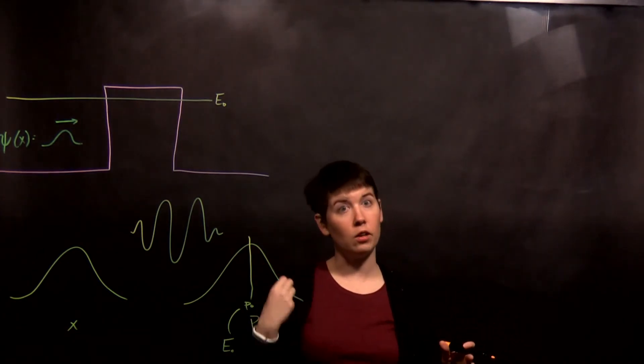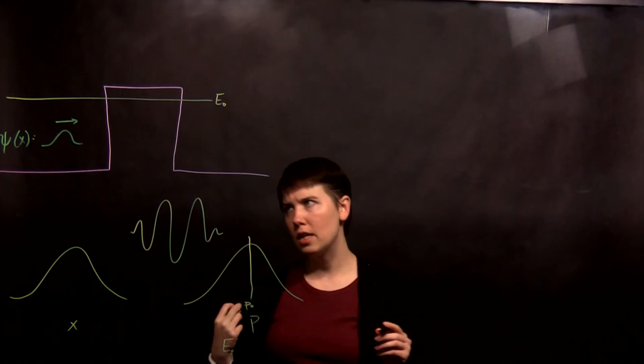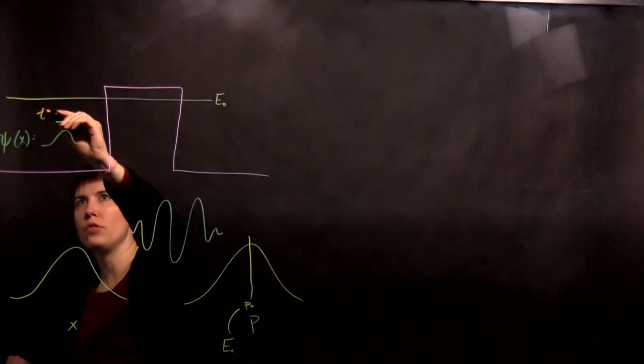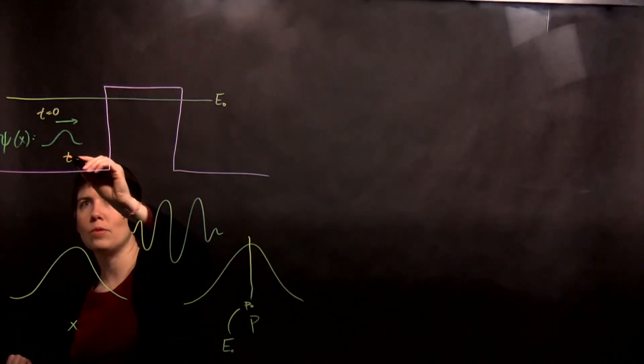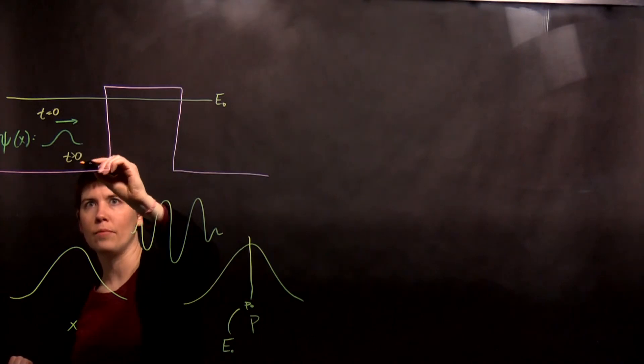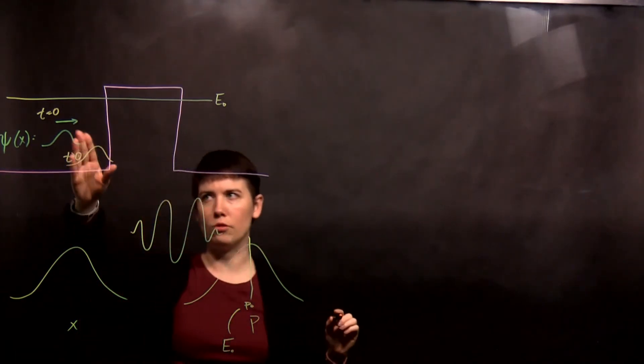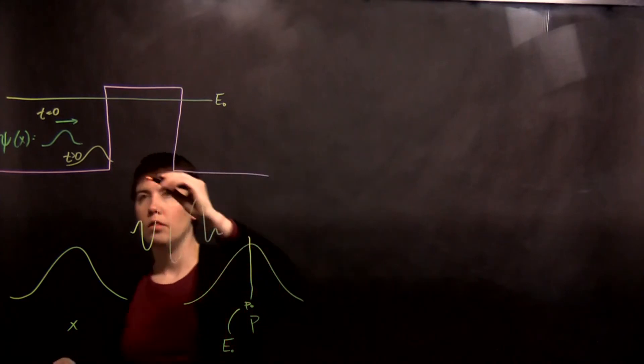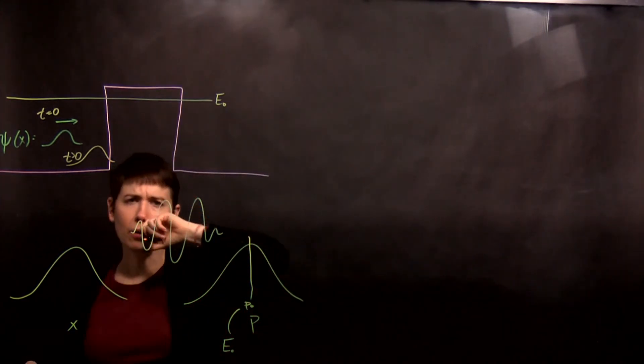It loses some of that coherence. So already, if this is kind of t equals zero, at some later time, it's already maybe a little bit smushed.